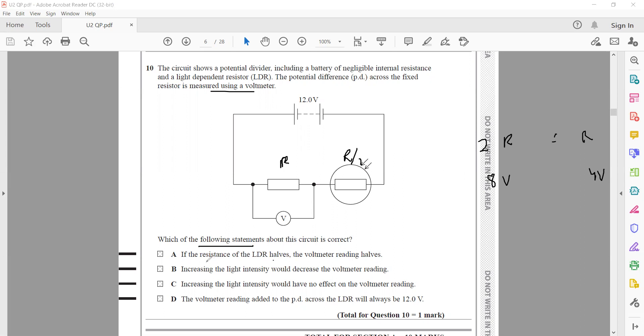If the resistance of LDR is halved, the voltmeter reading will be halved? That's not true. The voltmeter is in parallel to the fixed resistor, so the voltmeter reading will increase. Increasing the light intensity would decrease the voltmeter reading? If we increase the light intensity, since they're inversely proportional, more light means less resistance. Less resistance means less voltage drop across the LDR and more voltage drop across the fixed resistor, so the reading will not decrease, it will increase. The voltmeter reading added to the potential across LDR will always be 12, because according to Kirchhoff's second law, the total EMF equals the total potential difference. So D is the right answer.